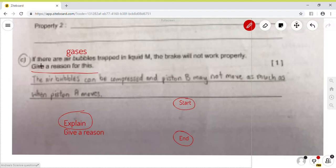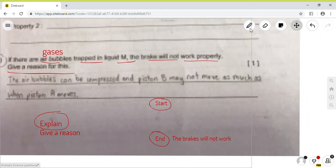All right, so let me use this question as an example. So, if there are air bubbles trapped in liquid M, the brakes will not work. So, this is the question. But what do you think is the start and the end? The end, let me just fill it in for you, is that the brakes will not work. Correct? So, the start is air bubbles. There are air bubbles.